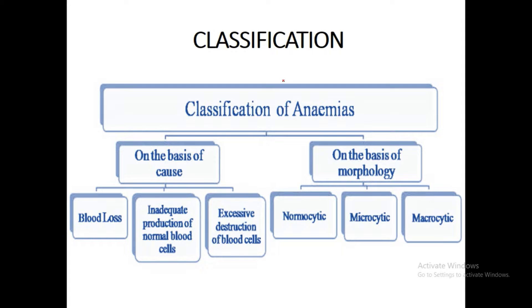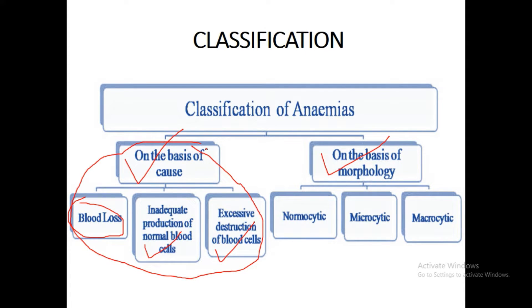Classification of anemia is done on two bases. First, on the basis of cause: blood loss anemia (acute or chronic), inadequate production of normal blood cells, and excessive destruction of blood cells. Second, on the basis of morphology — meaning size and shape — which includes normocytic, microcytic, and macrocytic anemia.